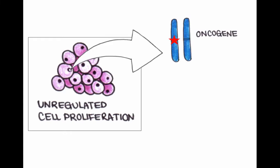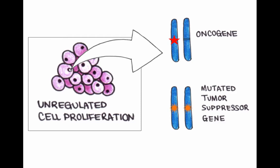The first process involves oncogenes that promote deranged cell proliferation. The second process involves mutated tumour suppressor genes that inhibit cell death.